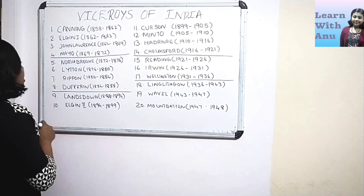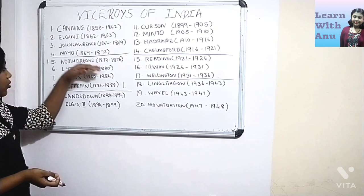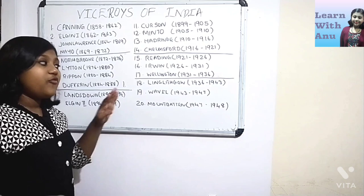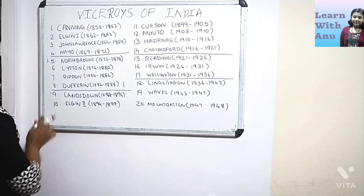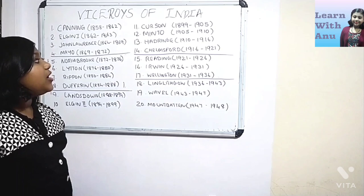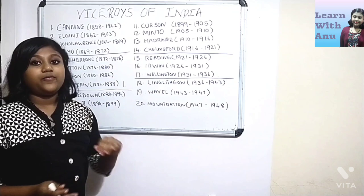From the fifth Viceroy to the eighth Viceroy — that's from Northbrook to Dufferin — we have a constant difference of four years. And the next set, from the ninth Viceroy, that's Lansdowne, to the fourteenth Viceroy, that's Chelmsford, we have an alternating pattern of six, five, six, five, six, five years.